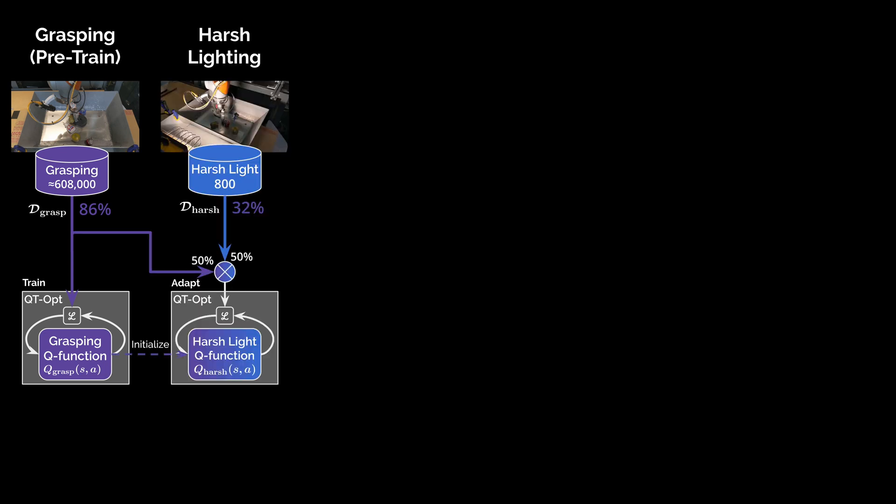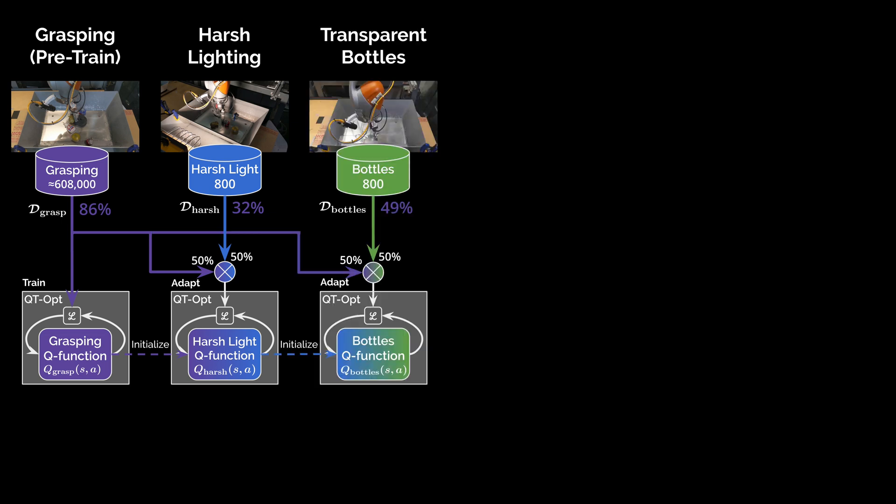To assess our method's suitability for continual learning, we devise a simple continual learning experiment which proceeds as follows. As before, we first pre-train a base Q function using a grasping dataset. And as before, we use this base Q function to explore a new task variation. We again combine the exploration data with the base data and initialize the fine-tuning process using the base Q function. But this time, not content to stop there, we repeat the process.